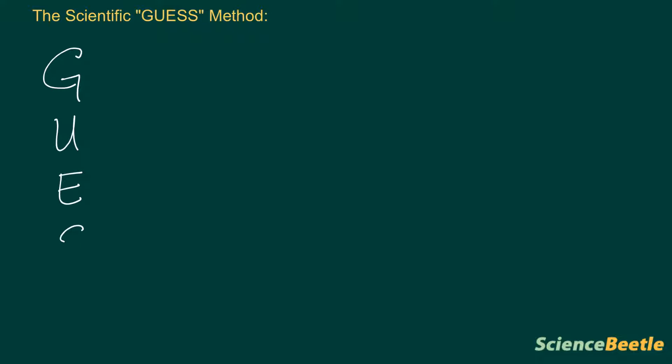What I mean by GUESS is the following acronym. These are a series of steps that I would like for you to be able to use. The first step when you're using the GUESS method is to identify the given. You want to ID that first.